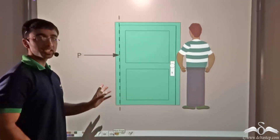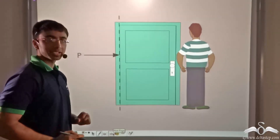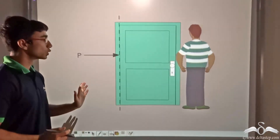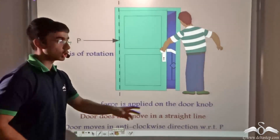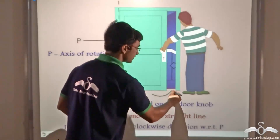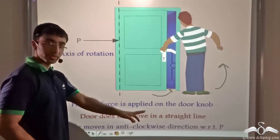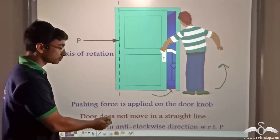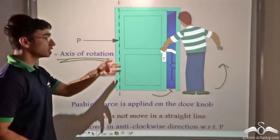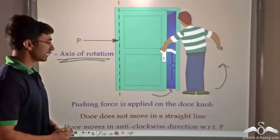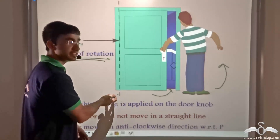Similarly, when the door is being closed with the help of the doorknob, the man is pushing the door and making it close. Even in this case the door is not moving in a straight line. When a pushing force is applied on the doorknob, the door is moving in the anti-clockwise direction about P — that is the axis of rotation. In both cases, the door is not moving in a straight line but in a rotatory motion about a fixed axis.